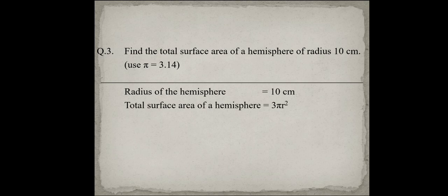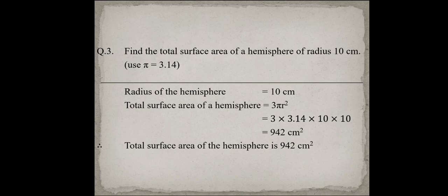The total surface area of a hemisphere is 3πr². This comes from the curved surface area of the hemisphere, which is 2πr², plus the area of the circular base, which is πr², giving 2πr² + πr² = 3πr². Putting in the values, the total surface area of the hemisphere is 942 cm².